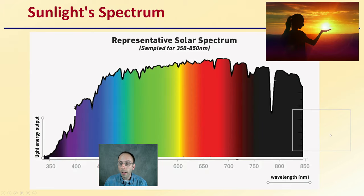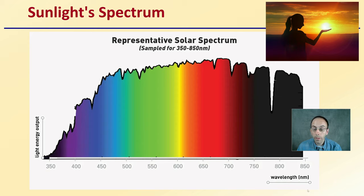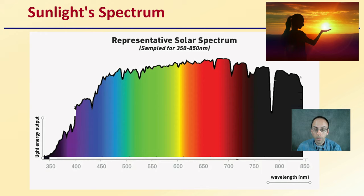Looking at a comparison spectrum — this is a representative solar spectrum, basically the output of the sun and what it produces as far as different wavelengths go. Wavelengths are measured in nanometers, and this is sampled from 350 to 850 nanometers, just to give an idea of the representative solar spectrum.